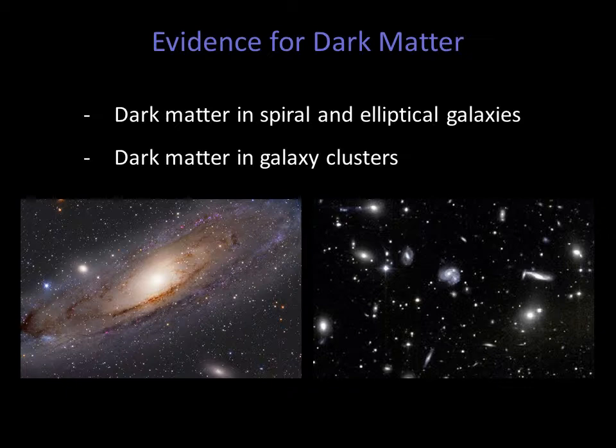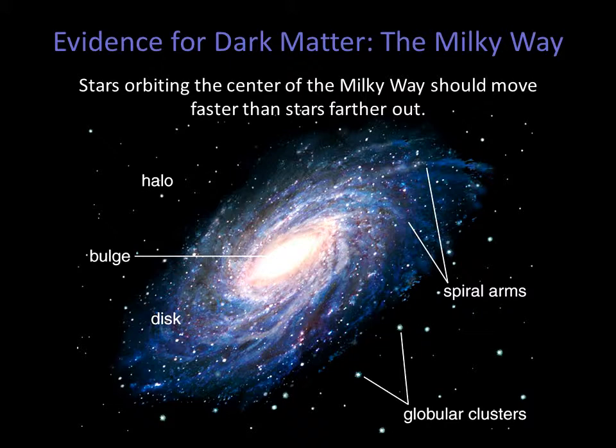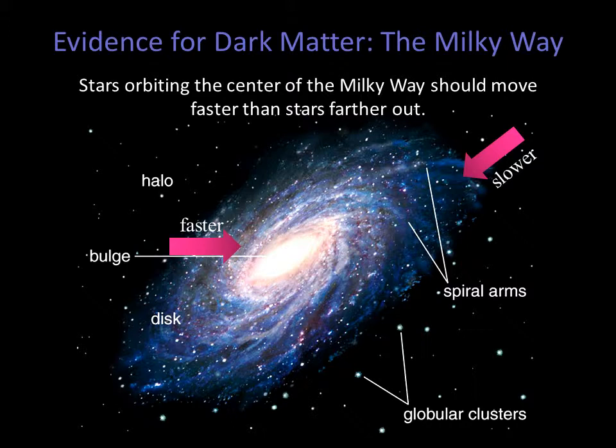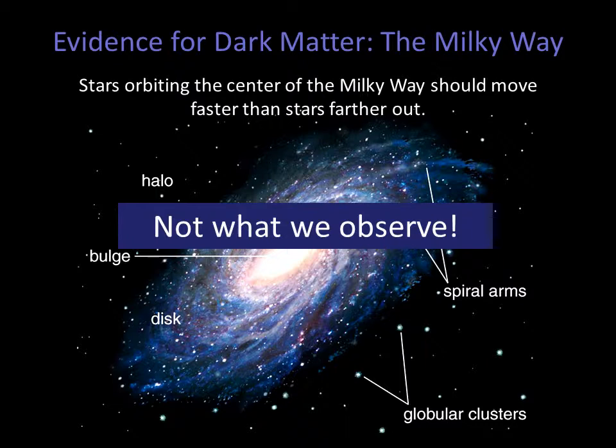Kepler's law tells us that for any astronomical system that has its mass concentrated at its center, objects near the center should be moving faster than objects far away. We saw this in our own solar system — the inner planets move faster, as well as in the accretion disks. We therefore expect that stars near the center of our galaxy should move faster than stars near the outer edges, but this is not what we observe.